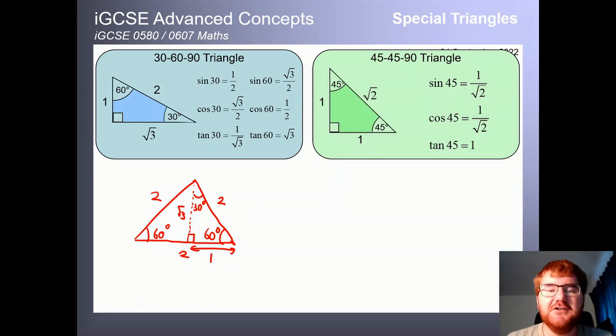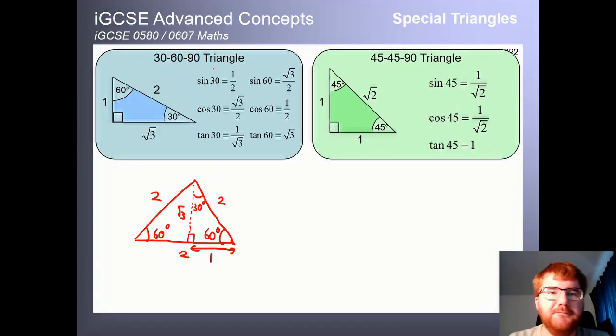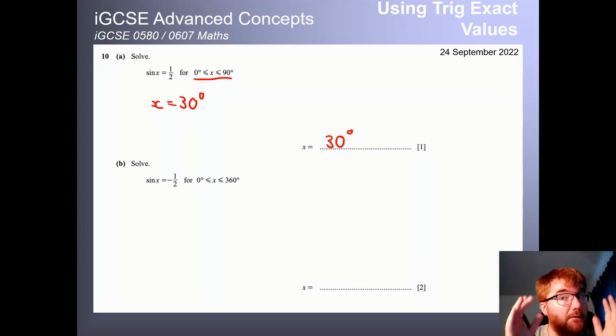Now, where is this actually useful to you? Well, I've got another question for you. Again, it's based on trigonometry. And the first question is really straightforward here. Solving this equation. Now, without a calculator, you have to know these exact values. So if you go back here, sin 30 is equal to a half. Therefore, if sin x is equal to a half between 0 and 90, then x must just be equal to 30 degrees. This can just give you a very easy mark. This is from a 0607 paper. Just by knowing that fact, one mark. Boom.